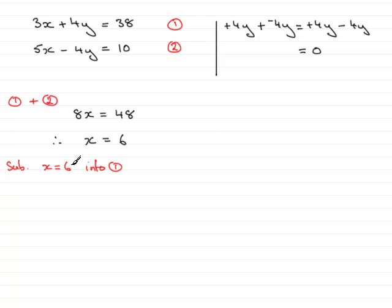So if I substitute x equals 6 into one, we have 3 times 6, so therefore 3 times 6 plus the 4y equals 38.